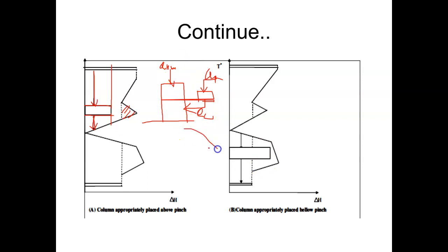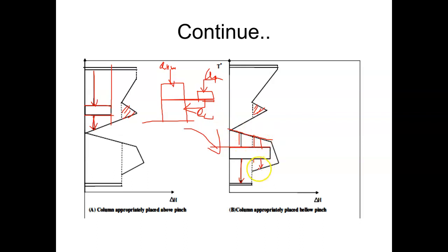Similarly, when the distillation column is below the pinch, the situation differs because the column penetrates the process-to-process transfer region. The reboiler is supplied by the process stream, but since the process stream was originally supposed to transfer that energy to another process stream, the condenser now partially supplies energy to the process and partially to the utility. Without the distillation column, this region represents pure process-to-process transfer; inserting the column disrupts this, as the reboiler receives energy from the process stream.